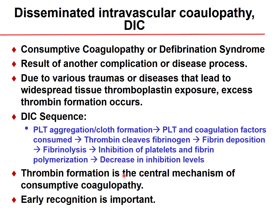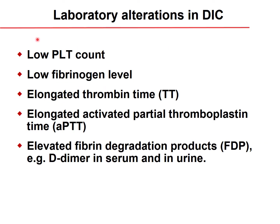Thrombin formation is the central mechanism of DIC, and early recognition is critical. To test for DIC: measure serial platelet counts to track changes over time, check fibrinogen level (which may be low), measure thrombin time and APTT (both elongated), and detect fibrin degradation products (FDP) and D-dimers in serum and urine.